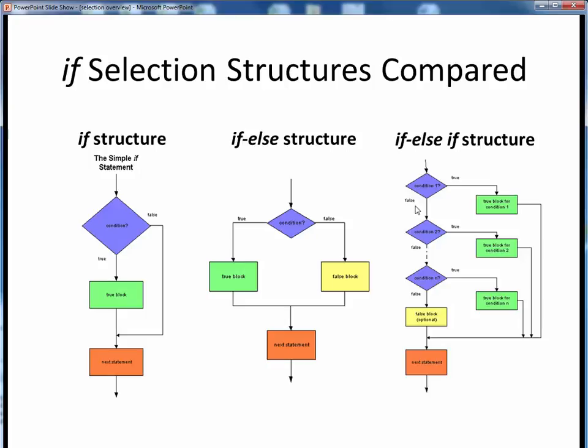Otherwise, if the first condition is false, we proceed to the second condition, where the process is repeated. If the condition is true, this set of statements in the second true block are executed. Otherwise, if false, we then proceed to the third condition, and so forth.